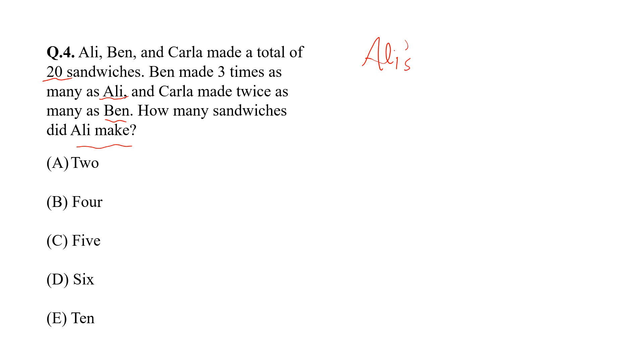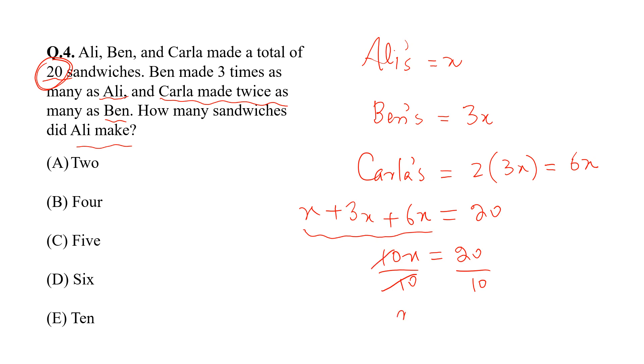Ali's sandwiches are X. So Ben's sandwiches are 3X. Then Carla made twice as Ben, so Carla's sandwiches are 2 into 3X. Twice as Ben, so 2 into 3X, this is 6X. Now the total sandwiches are 20, so X plus 3X plus 6X is equal to 20. Add these and we get 10X is equal to 20. Dividing both sides by 10 and we get X is equal to 2.